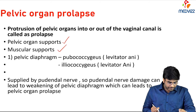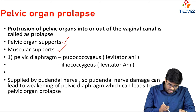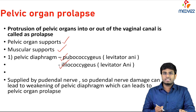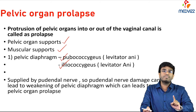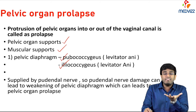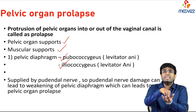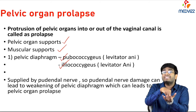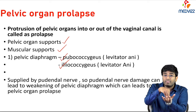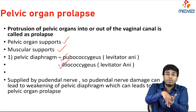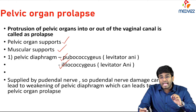The muscular support is the pelvic diaphragm, which is formed by the levator ani muscles — specifically pubococcygeus and iliococcygeus. These two muscles form the pelvic diaphragm, which supports the uterus and cervix. If there is any problem with the pelvic diaphragm — for example, loss of tonicity — then the uterus cannot be supported and can easily prolapse.